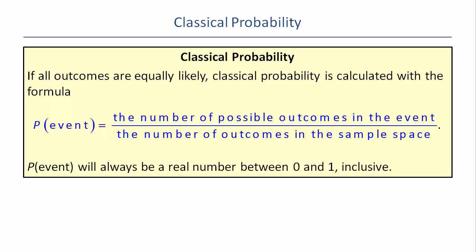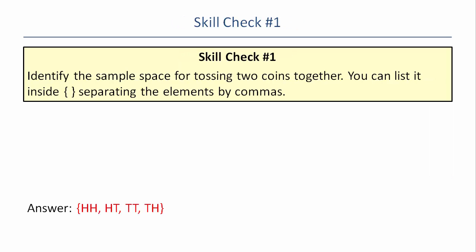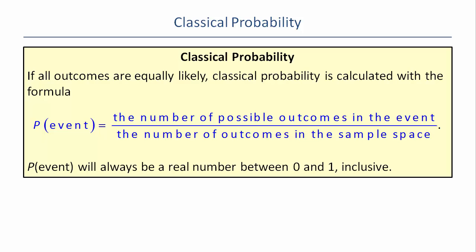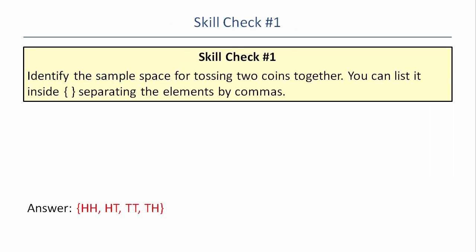Classical or theoretical probability is figuring out what probability should be if we ran the experiment an infinite number of times. Experimental probability is the observed probability from actually running the experiment. Classical probability envisions working with the entire sample space. Figuring out the probability of any event is straightforward: count the number of outcomes in that event and divide by the total number of outcomes in the entire sample space. For getting exactly one tails out of two flips, that's two out of four.